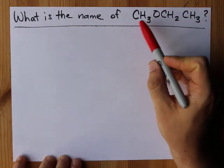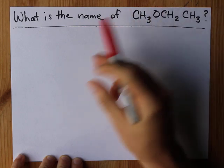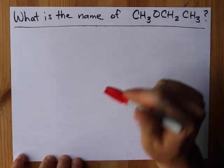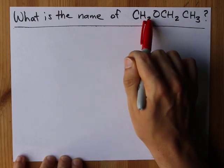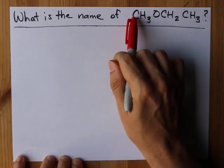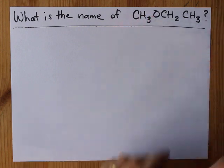Put another way, each carbon can have four bonds, and if three of them are taken up with hydrogen, that carbon can only make one more bond to something else.